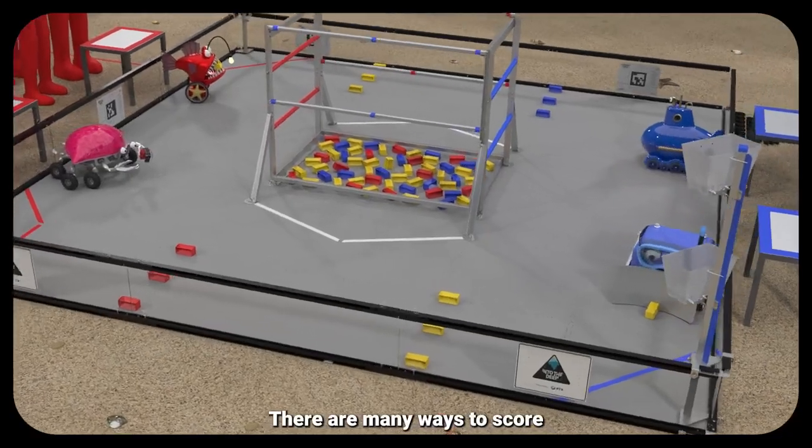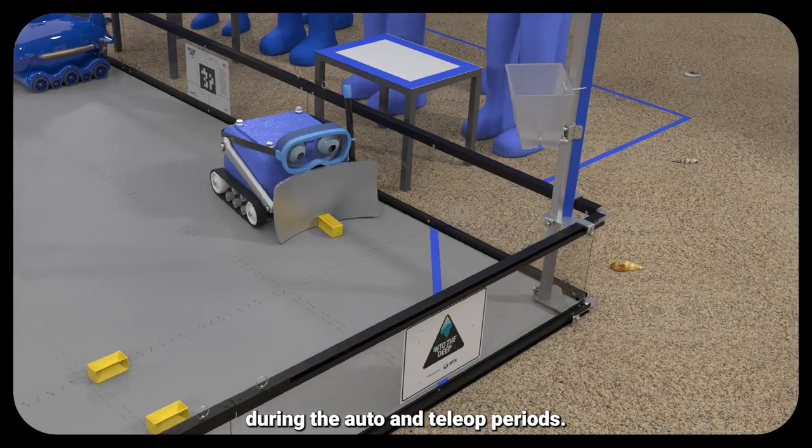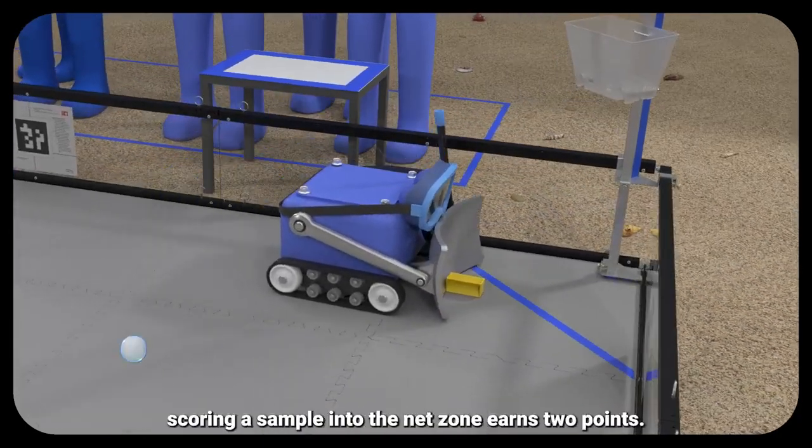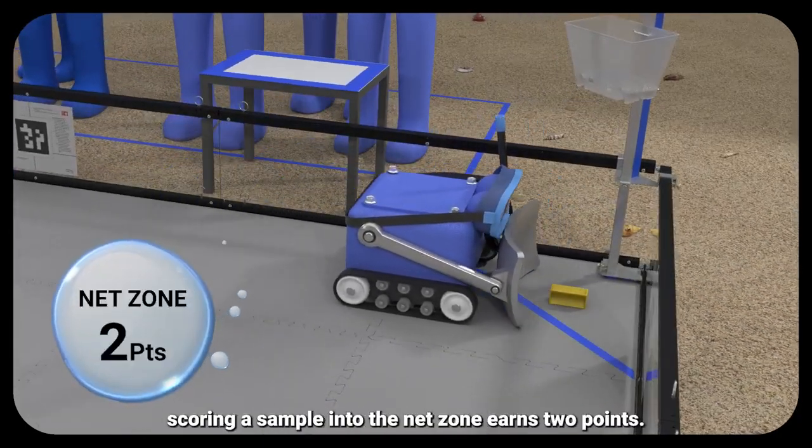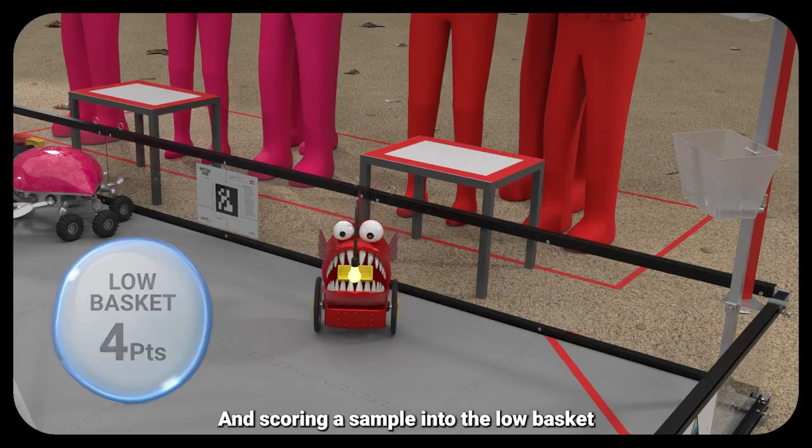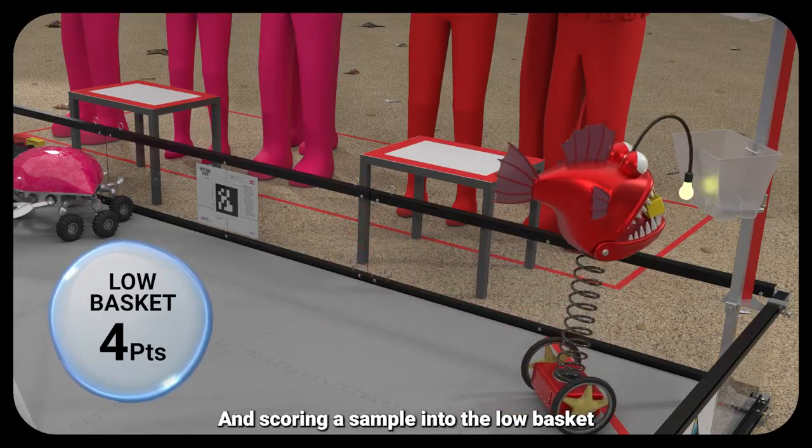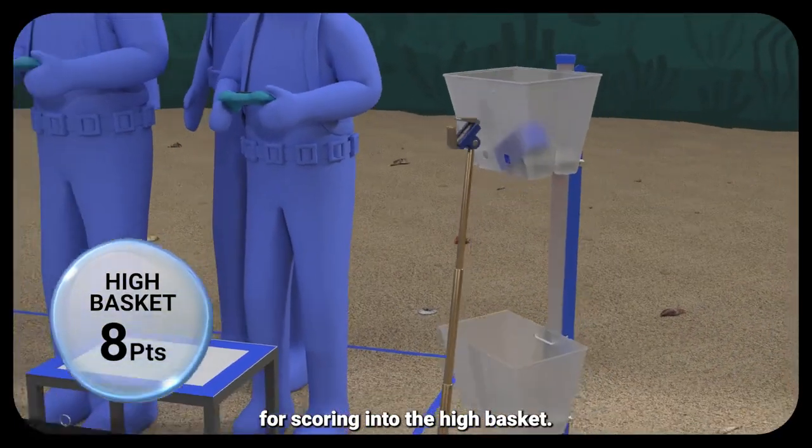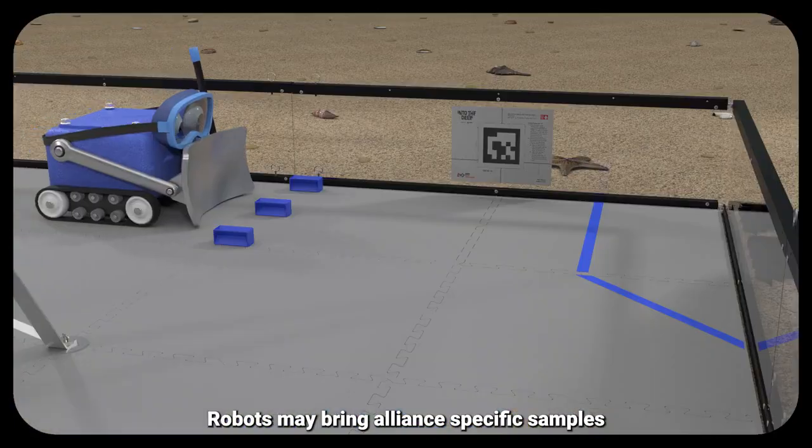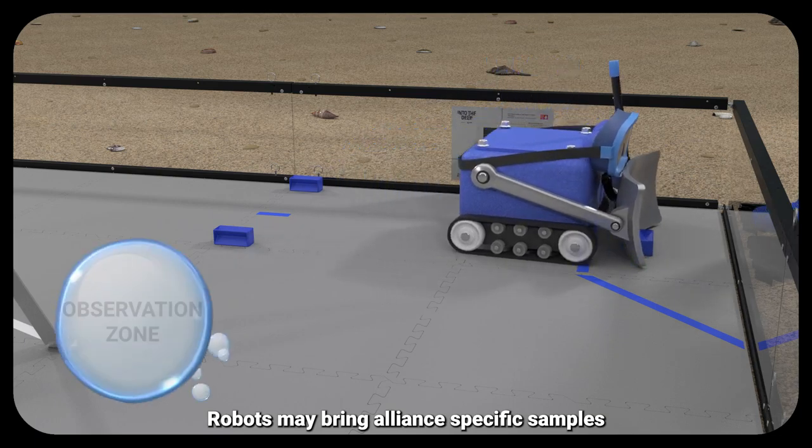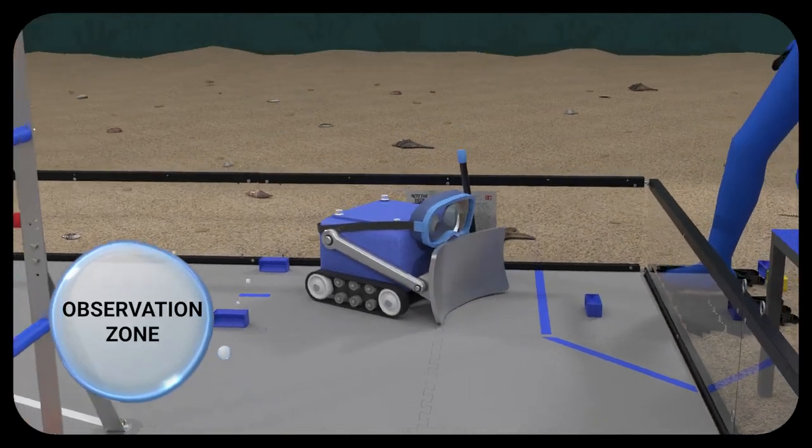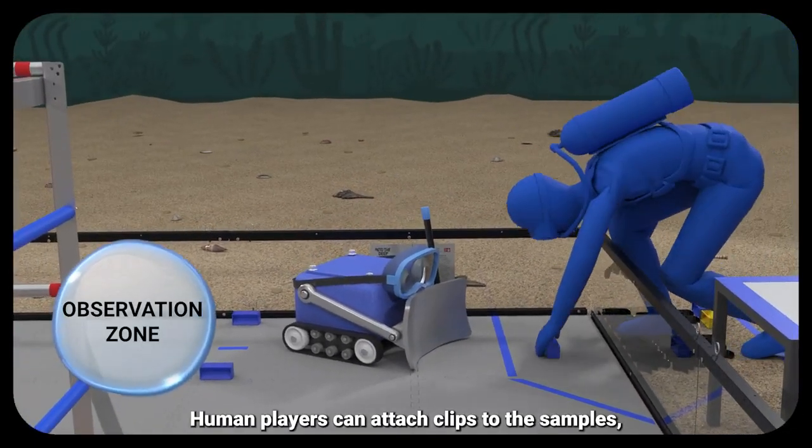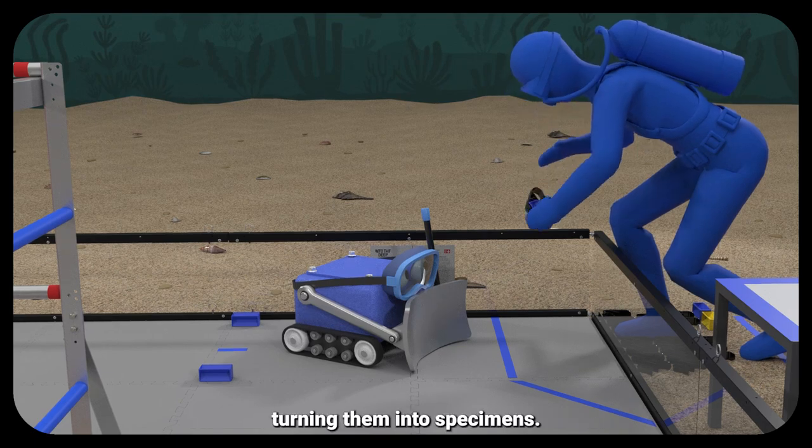There are many ways to score during the auto and teleop periods. For example, scoring a sample into the net zone earns 2 points, and scoring a sample into the low basket earns 4 points, or 8 points for scoring into the high basket. Robots may bring alliance-specific samples to the observation zone. In this game, human players can attach clips to the samples, turning them into specimens.